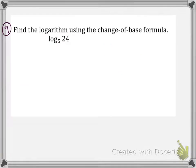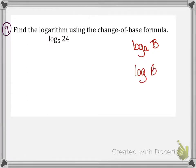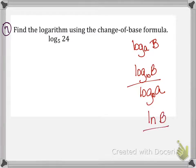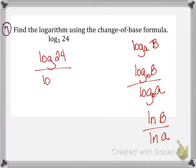Number 7 asks us to find the logarithm using the change of base formula. The change of base formula: if I have log base a of b and don't know base a, I can do log(b) / log(a), where log is base 10. You could also use the natural log. So here I would do log(24) / log(5).